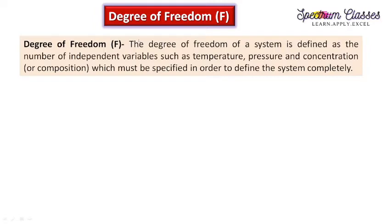So what is called degree of freedom? Degree of freedom of a system is defined as the number of independent variables such as temperature, pressure, and concentration or composition which must be specified in order to define the system completely. This degree of freedom in the phase rule can be written in the form of a formula: F is equal to C minus P plus 2.